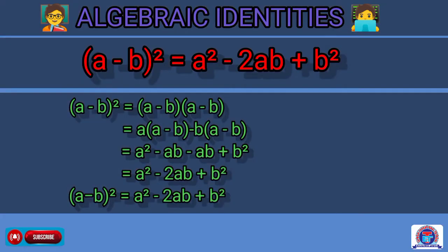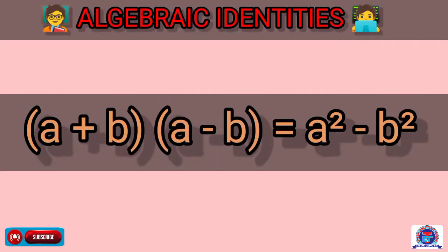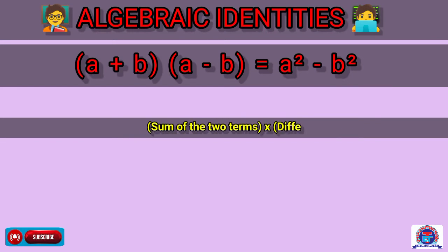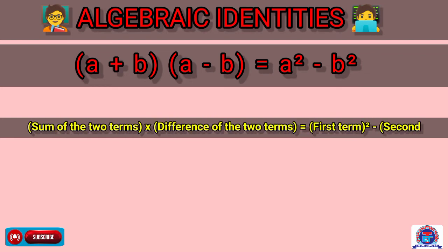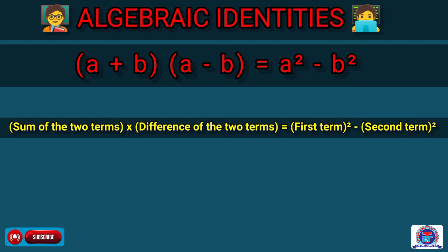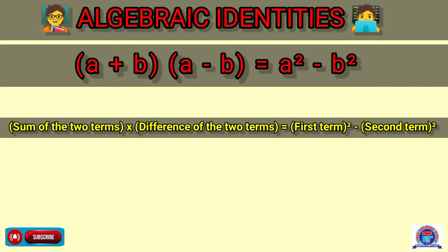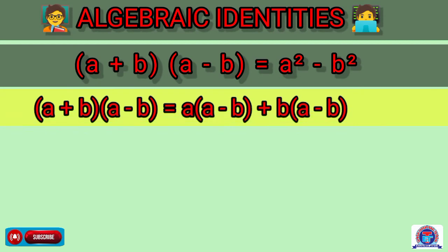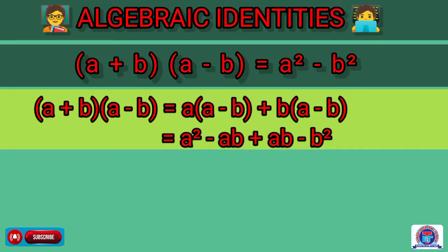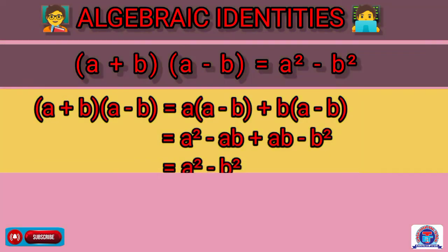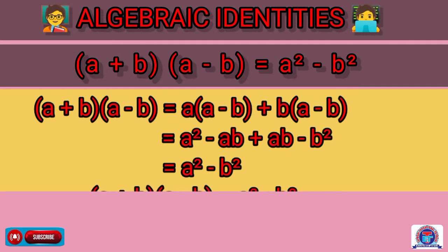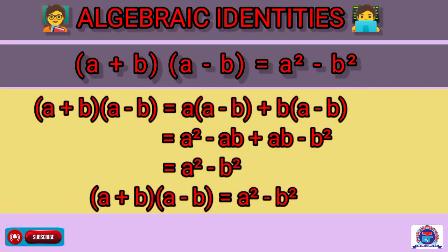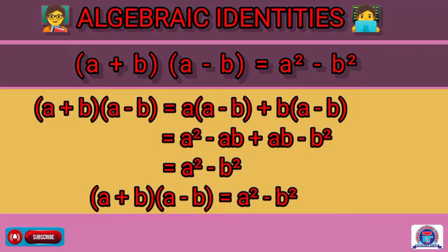Now we find out the identity a plus b into a minus b is equal to a square minus b square. In other words, the sum of two terms into the difference of two terms equals the first term's whole square minus the second term's whole square. To prove it, we write a plus b into a minus b, use the distributive property to get a into a minus b plus b into a minus b, which gives a square minus ab plus ab minus b square. So it is proved that a plus b into a minus b equals a square minus b square.